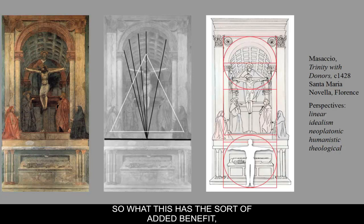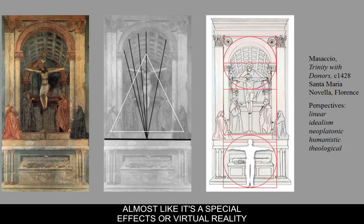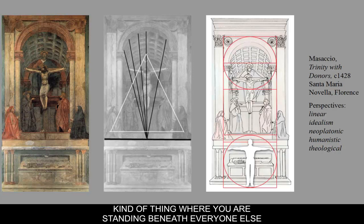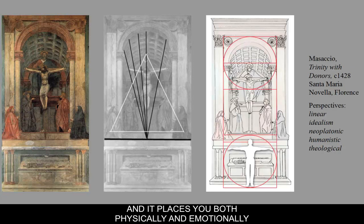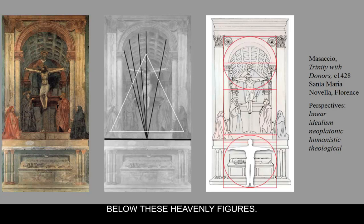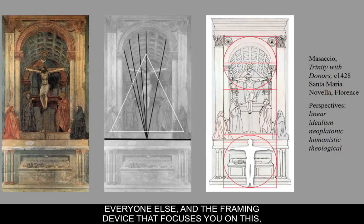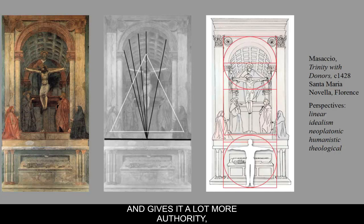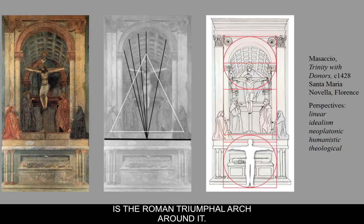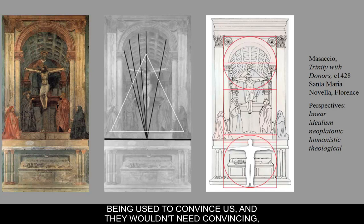The added benefit of linear perspective is that it ties in with your experience of the fresco — almost like a special effects or virtual reality thing — where you are standing beneath everyone else. It places you physically, emotionally, and perceptually below the horizon line, below these heavenly figures. It also places the donors above you, making a social statement. The Trinity is above everyone else, and the framing device that gives it authority and historical pedigree is the Roman triumphal arch. So we have all these different kinds of perspectives being used to give extra punch to the theological message.